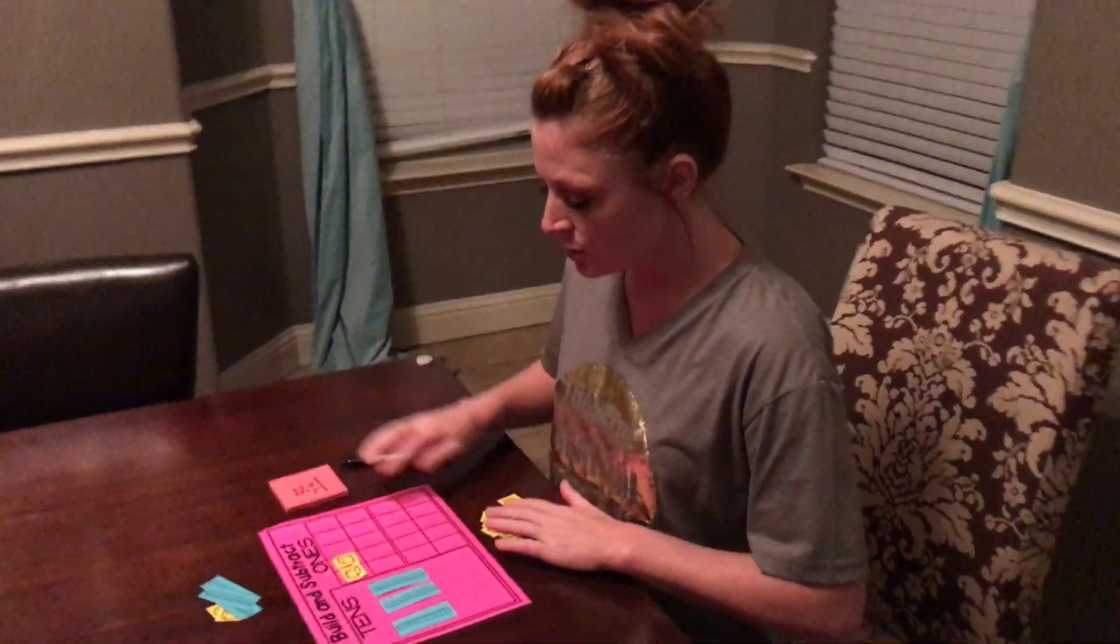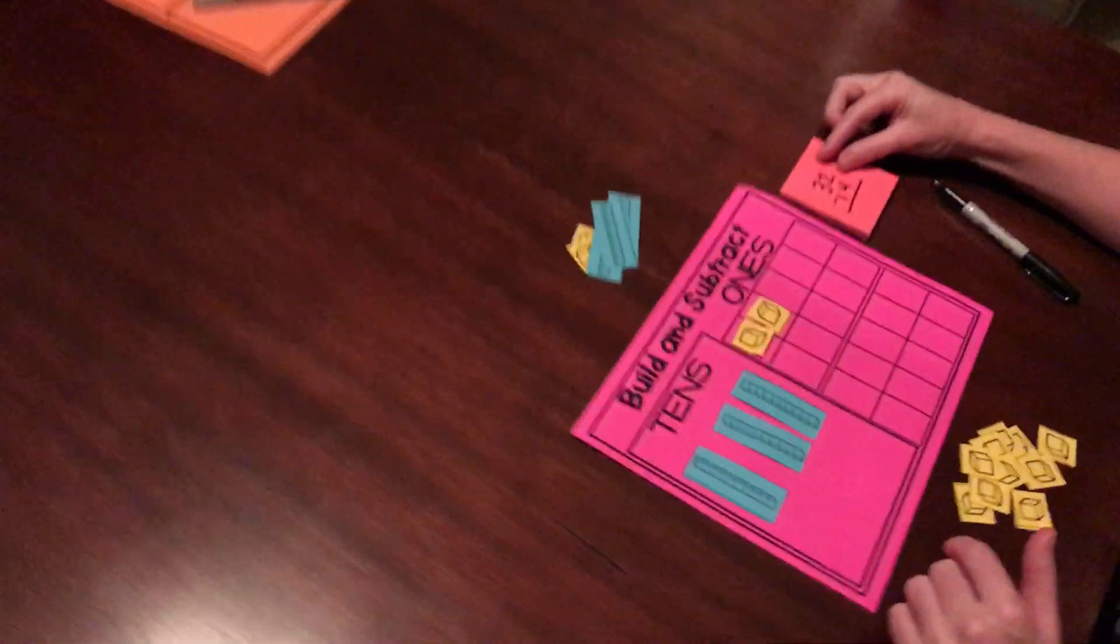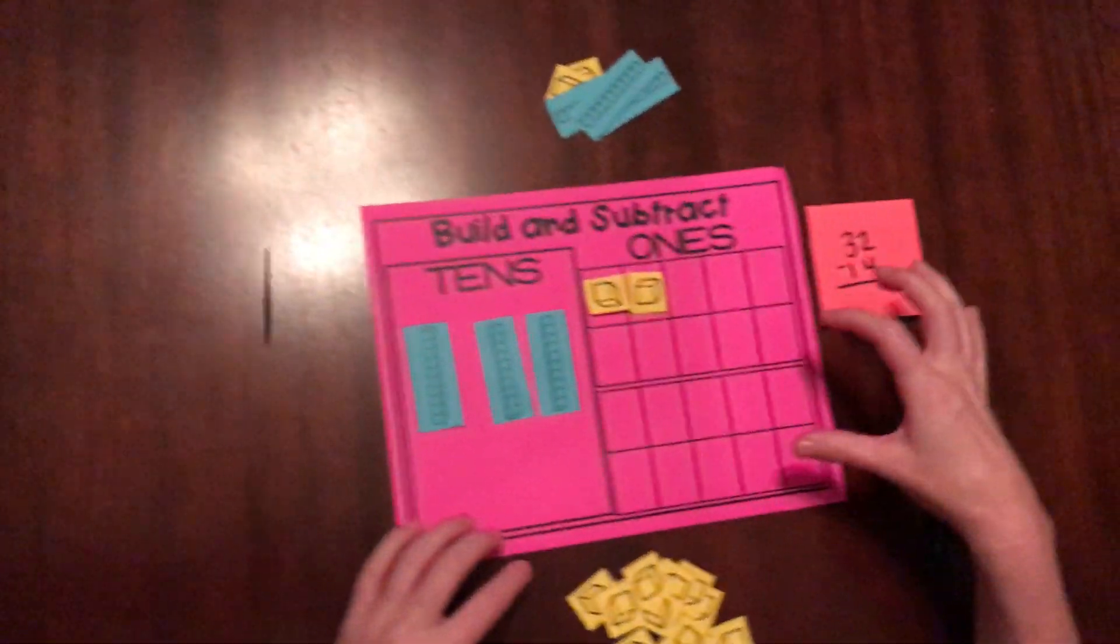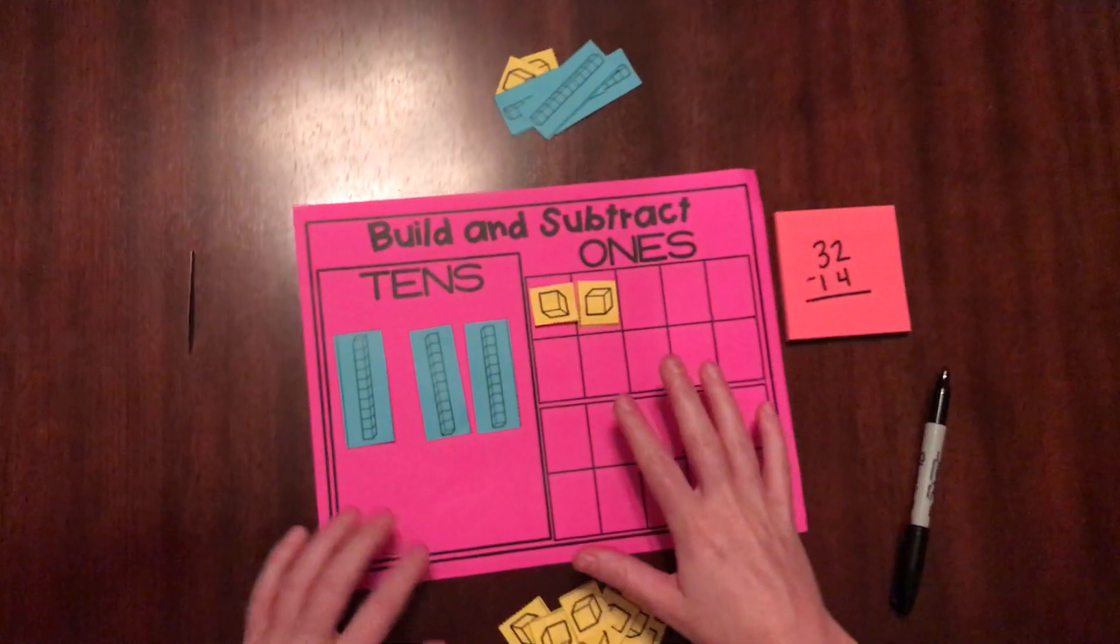What your students are going to do is they always build the top number. So I have 32 here on my board. I have three tens and two ones.